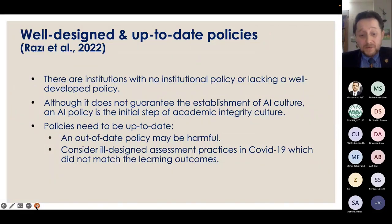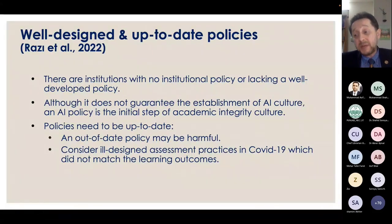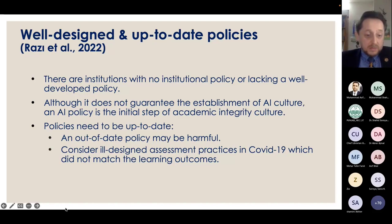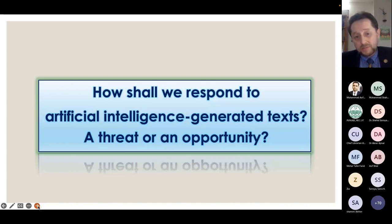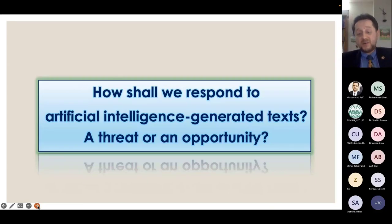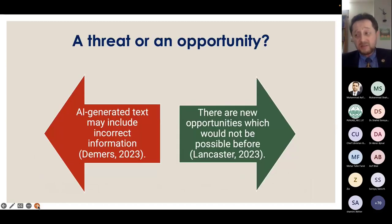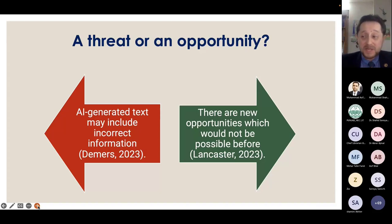Now we have artificial intelligence technology, and institutions need to revise their academic integrity policies to address AI technologies. The question is: how shall we react towards artificial intelligence — shall we consider it a threat or an opportunity? When we check the relevant literature, we have very limited research because it is a very new concept, with very few peer-reviewed studies, though there are more blogs and personal opinions about the topic.